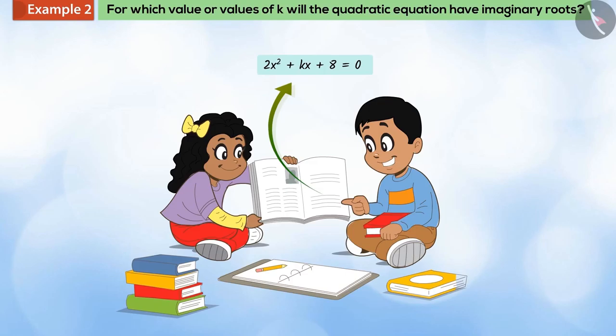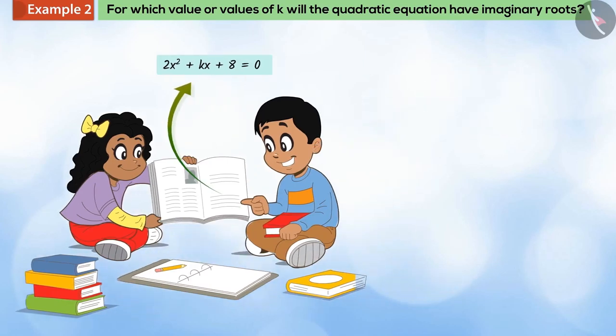Jaya says, it's very easy. I will solve it now. First of all, by comparing this equation broadly with the standard form of the quadratic equation, we get the values of A, B and C.